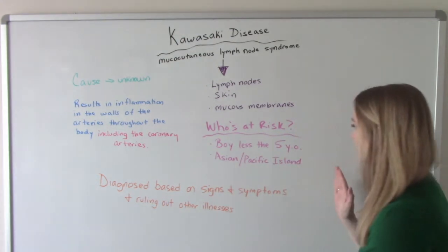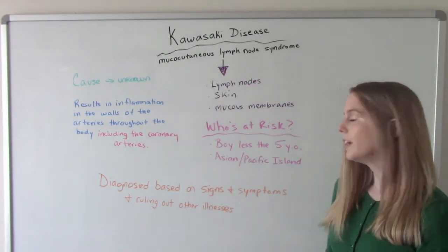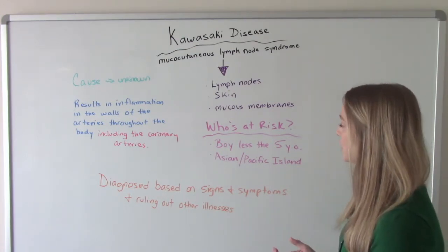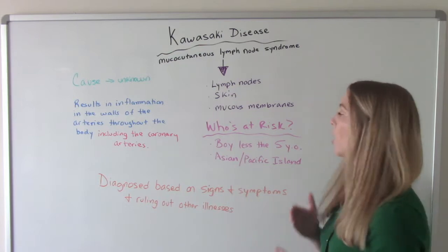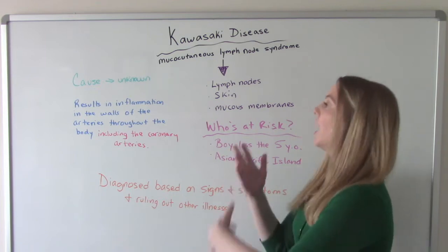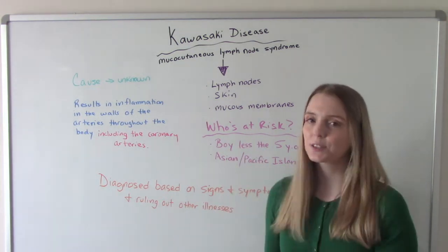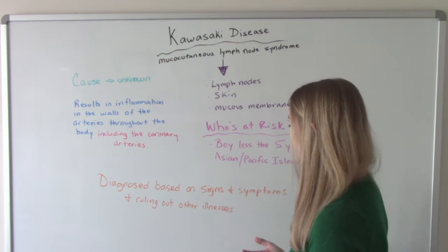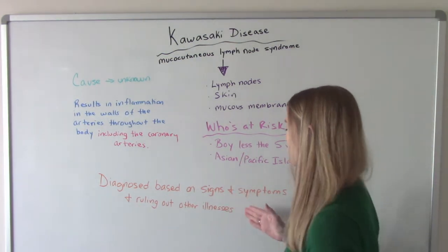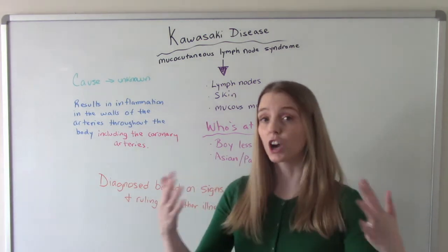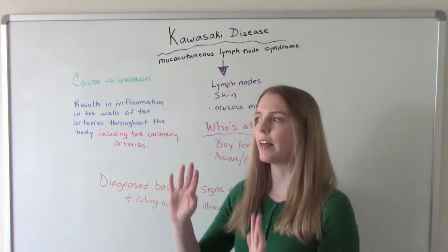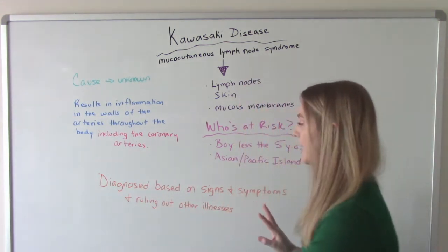Who's at risk for this? Usually boys — male gender — and they're usually less than five years old. People who are of Asian or Pacific Island descent are also at higher risk. As for diagnosis, unfortunately there is no specific test for this one. They go off the signs and symptoms and test for other things with similar presentations, like scarlet fever. When those come back negative, they rule it out and determine it must be Kawasaki disease.